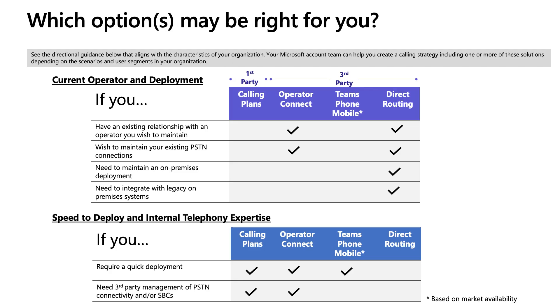So how do I figure out which one's right for me? Is there a simple chart? Let's talk about your chart. I think it helps us cut through the confusion. We've put together a framework. There are three different categories. As you're working with your account team — or deciding yourself — we encourage you to think about: do you have a current operator or existing deployment you want to maintain? Are you looking to optimize for speed of deployment, and do you have internal telephony expertise in your organization? And what are your regional and workforce characteristics?